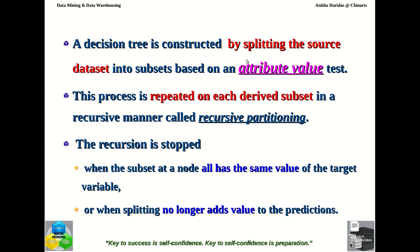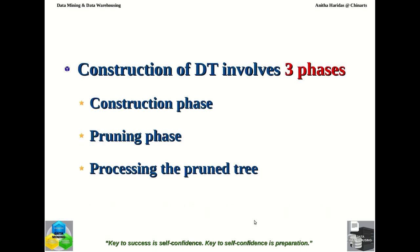The decision tree is constructed by splitting, then recursively partitioning derived subsets. The recursion stops when all records in the subset have the same class value, or splitting gives no new value for prediction. There are three phases for constructing a decision tree: the construction phase, the pruning phase, and processing the pruned tree.